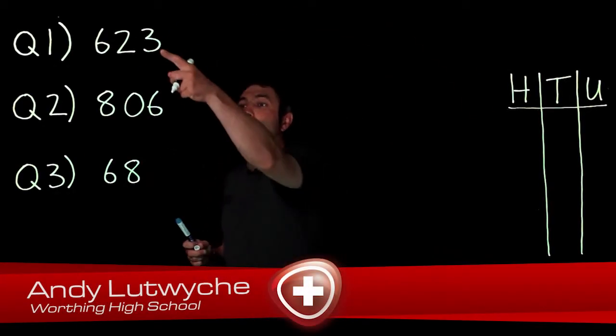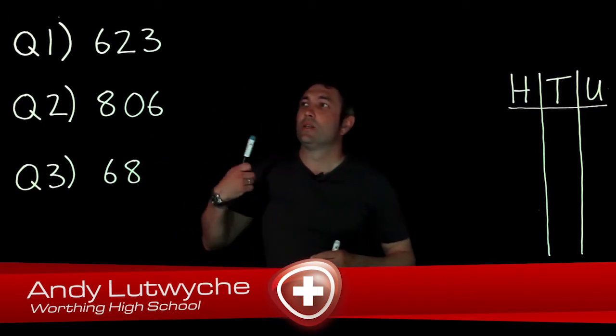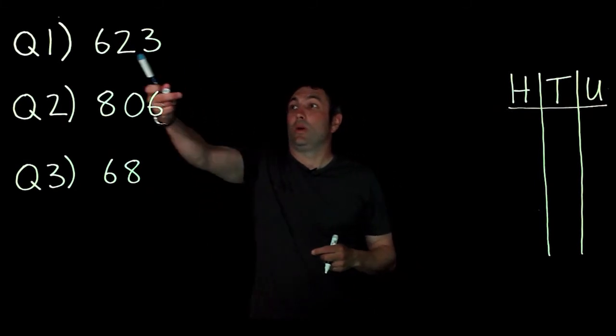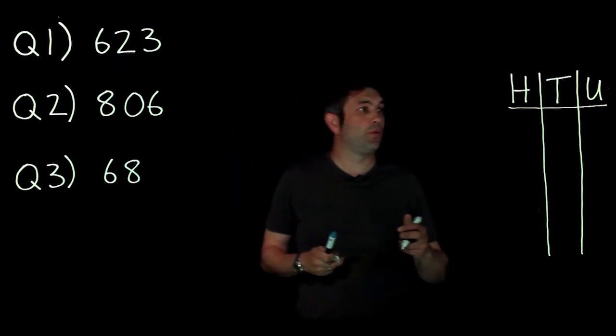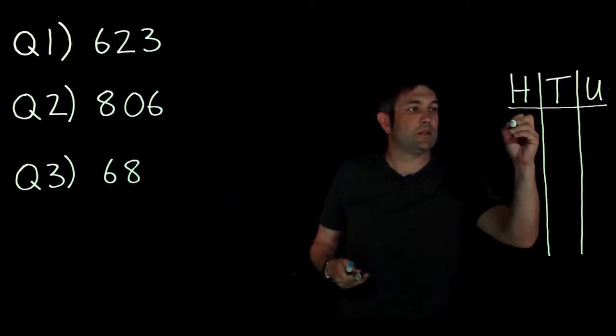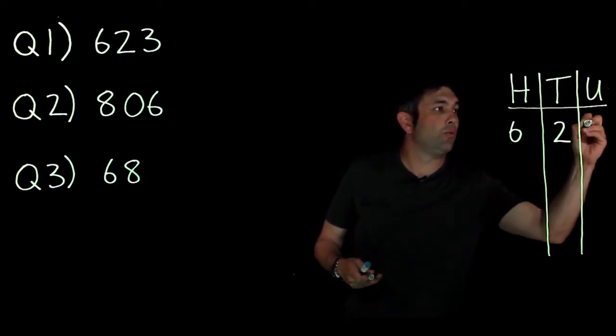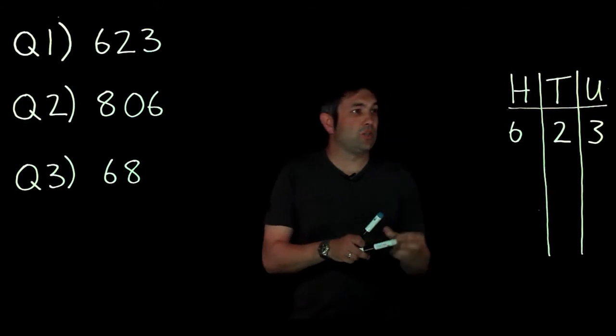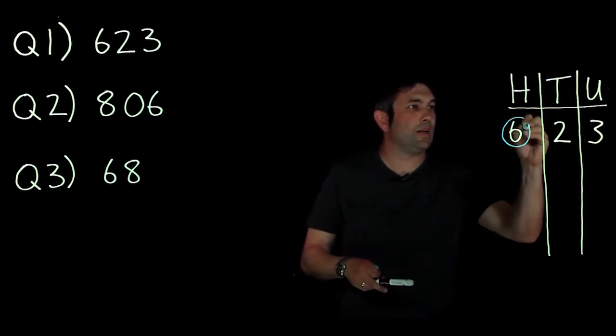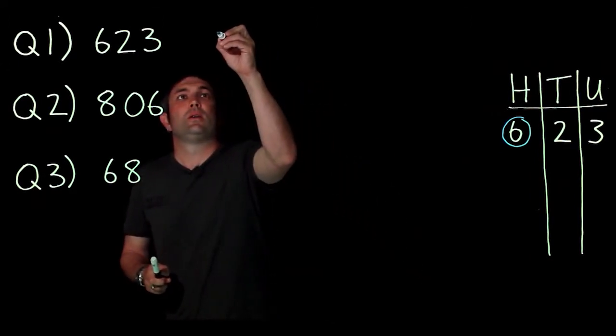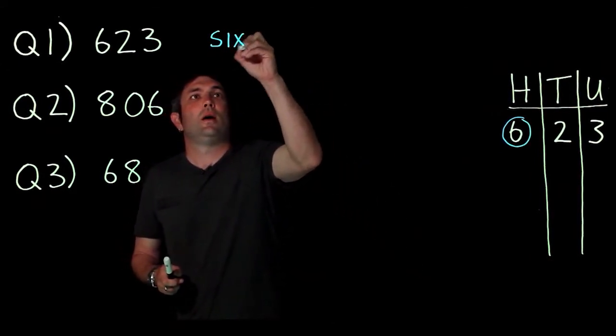Okay, in these questions we've got three numbers and we're told to say what the six represents. So look at this first one here: six two three. I'm going to write it in this table that I've written over here: 623. So I want the six, so I'm going to circle the six and that is in the hundreds column. So I'm going to write six hundred.